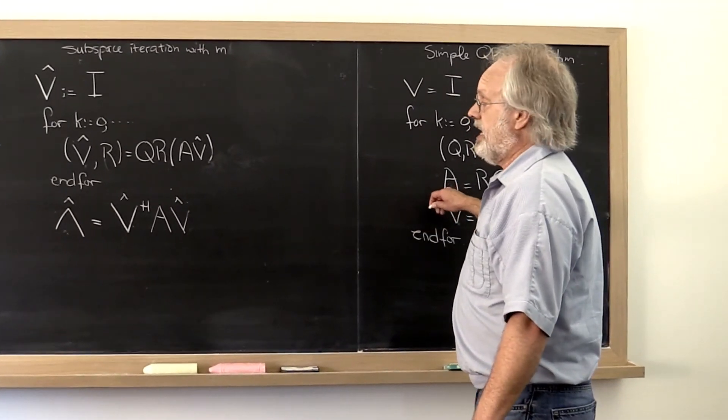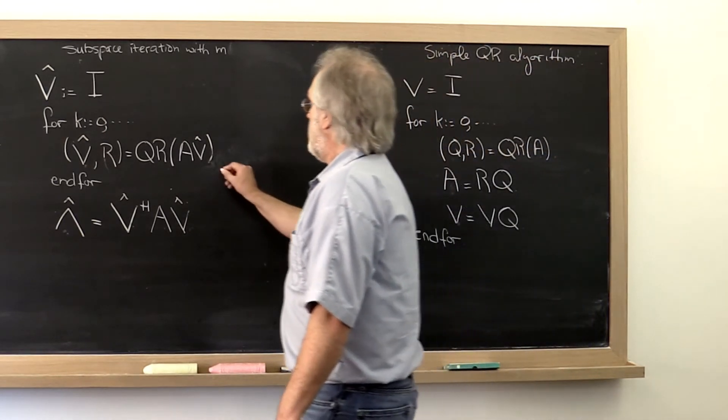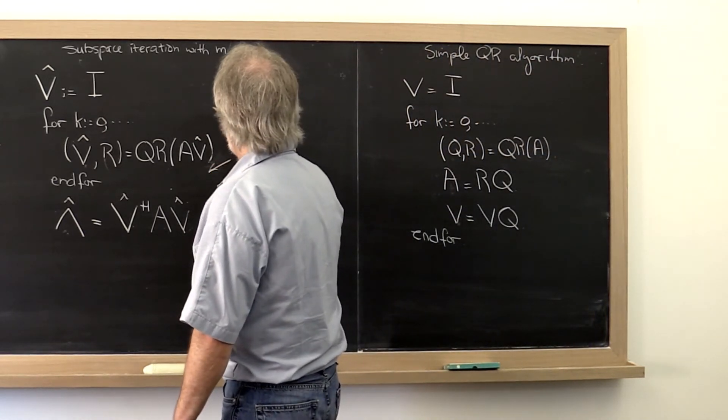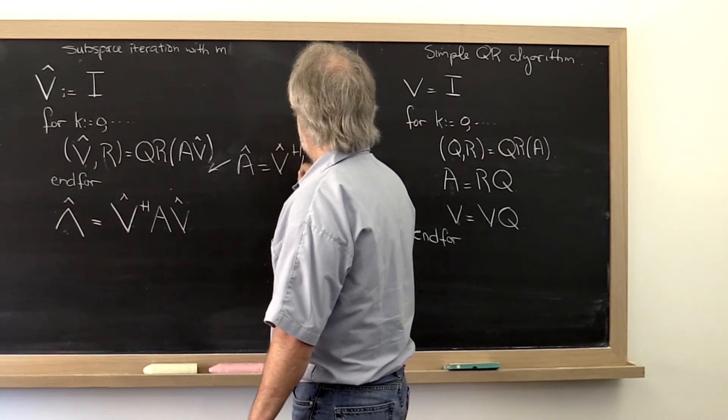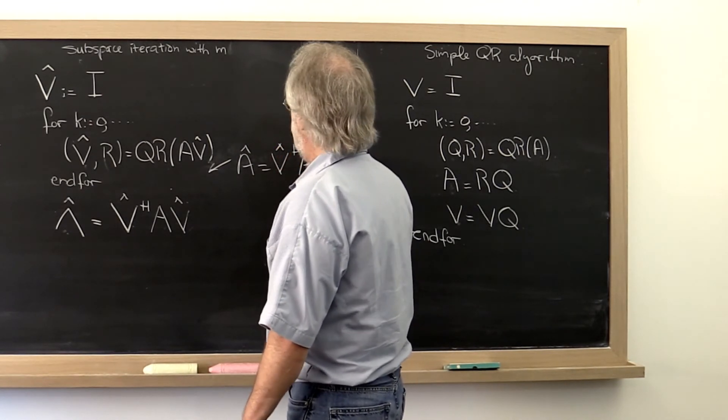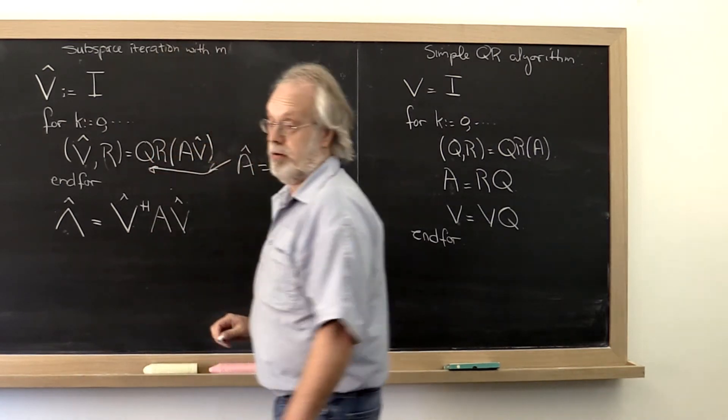And this matrix A right here actually ends up being the matrix A hat, which we would have computed as V hat Hermitian A V hat, had we done this in every iteration.